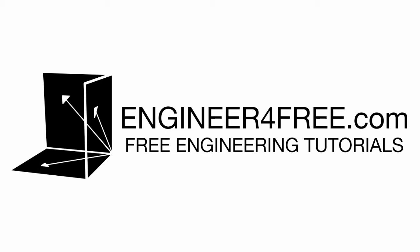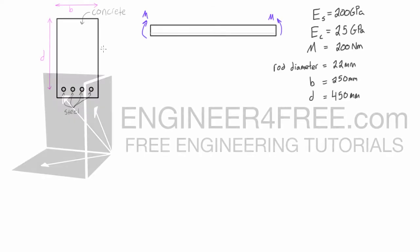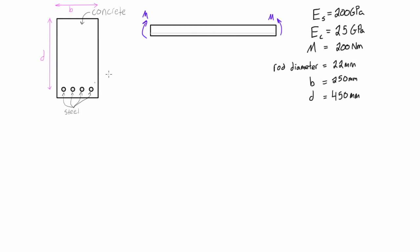Hey guys, welcome back. In this video we are doing a first example on pure bending of reinforced concrete. If you saw the last video, we went over the method on how to solve this type of problem, and in this video we're following that exact same method except now we just have some actual geometry and numbers. We want to figure out where the neutral axis is and then the moment of inertia of the transformed cross section.